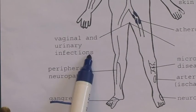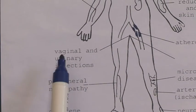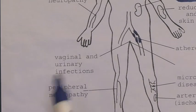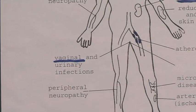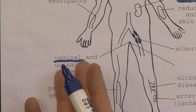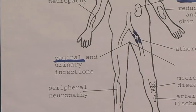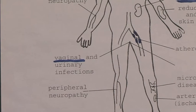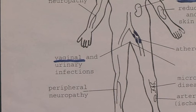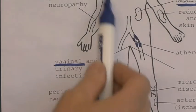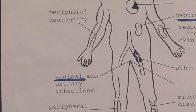Vaginal and urinary infections are notable complications. Vaginal infections can actually be a presentation of type 1 or type 2 diabetes — more commonly type 2 — because the high levels of sugars in the vaginal secretions make fungal infections particularly likely. Urinary tract infections are also more probable. Peripheral neuropathy can affect the arms but mostly affects the legs.